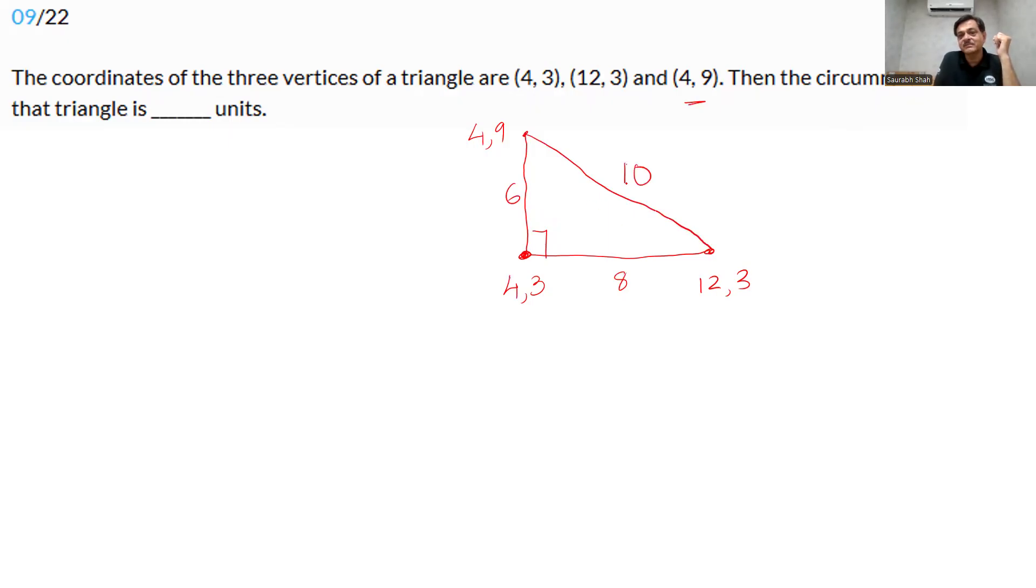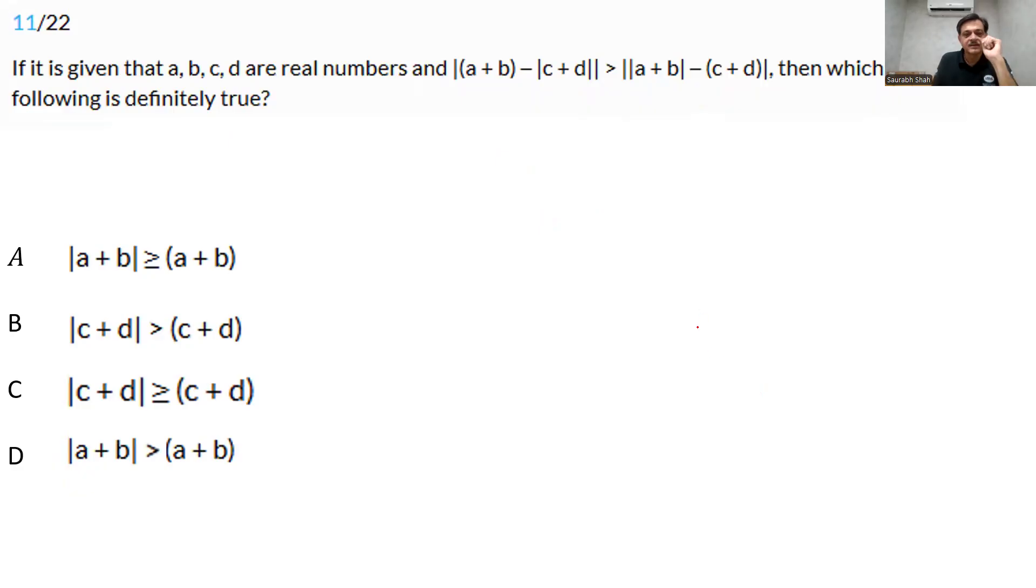The hypotenuse becomes 10. And in a rectangle triangle, the hypotenuse is the circum diameter. So 10 is the diameter. So obviously, the radius required would simply be 5. The correct answer is 5. The correct answer to be entered was 5.